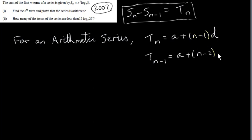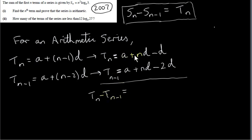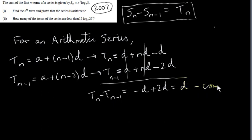Plugging n−1 in for n and expanding: multiplying d into (n−1) gives nd − d, and d into (n−2) gives nd − 2d. Now subtract the two equations. The left-hand side gives tₙ − tₙ₋₁. On the right-hand side these terms cancel, and we're left with −d minus −2d, which is +2d − d = d. So the nth term minus the (n−1)th term is a constant d. There's no n involved — it doesn't vary.